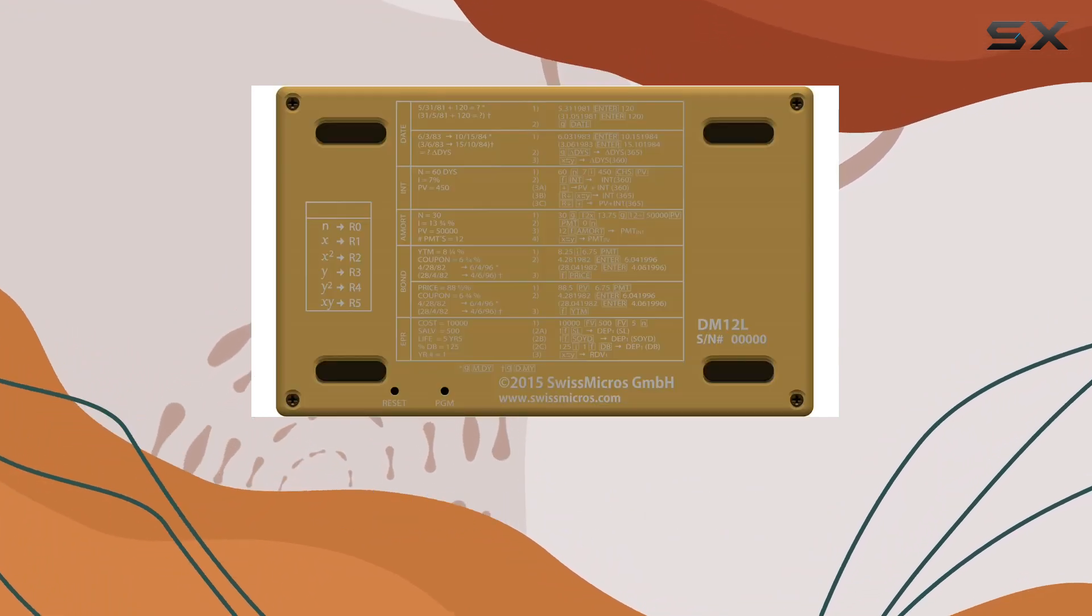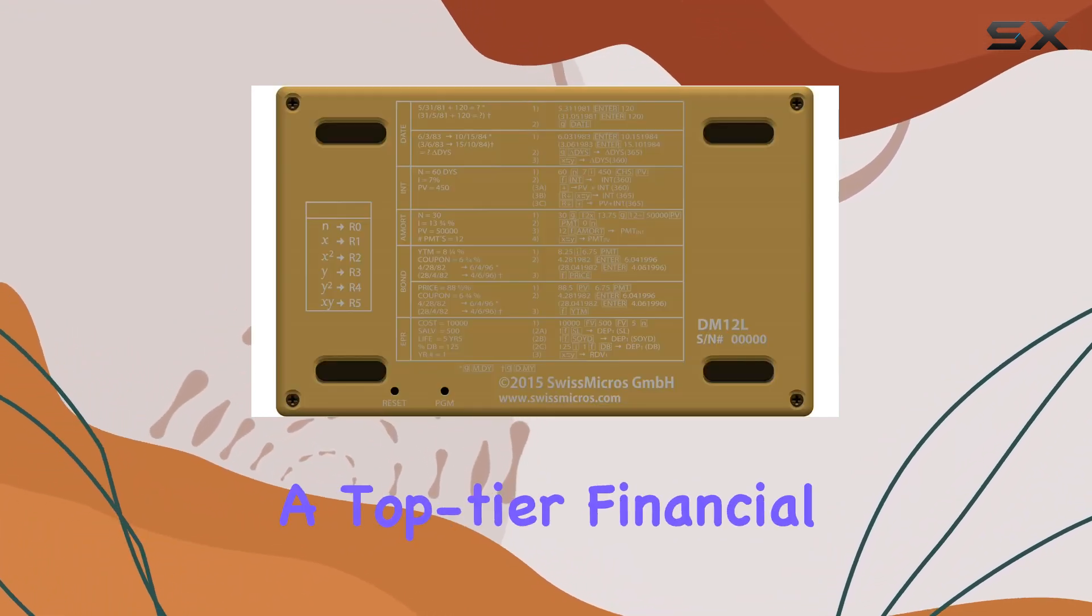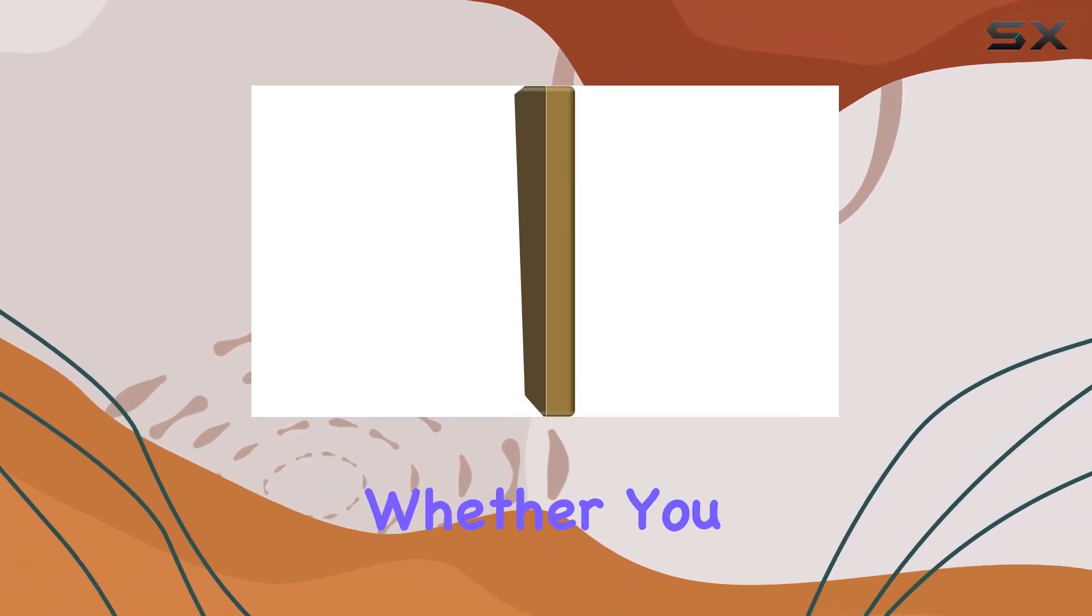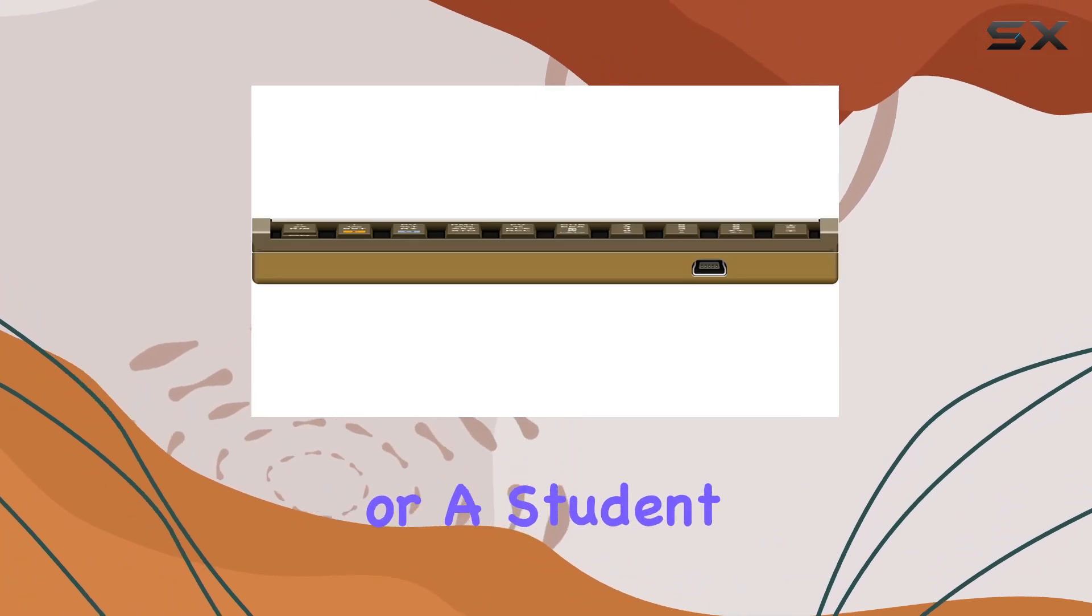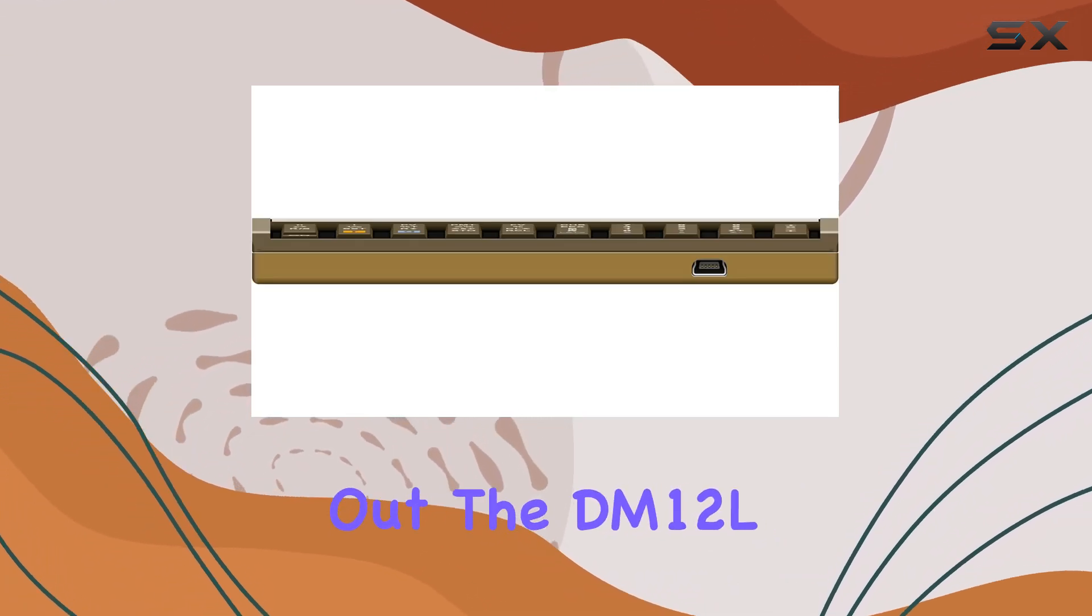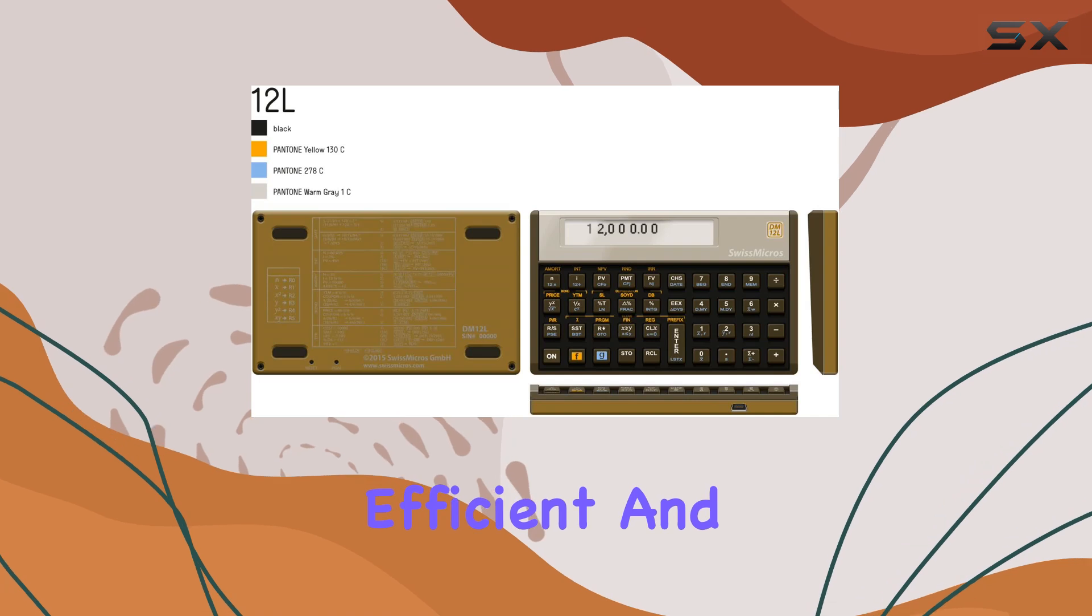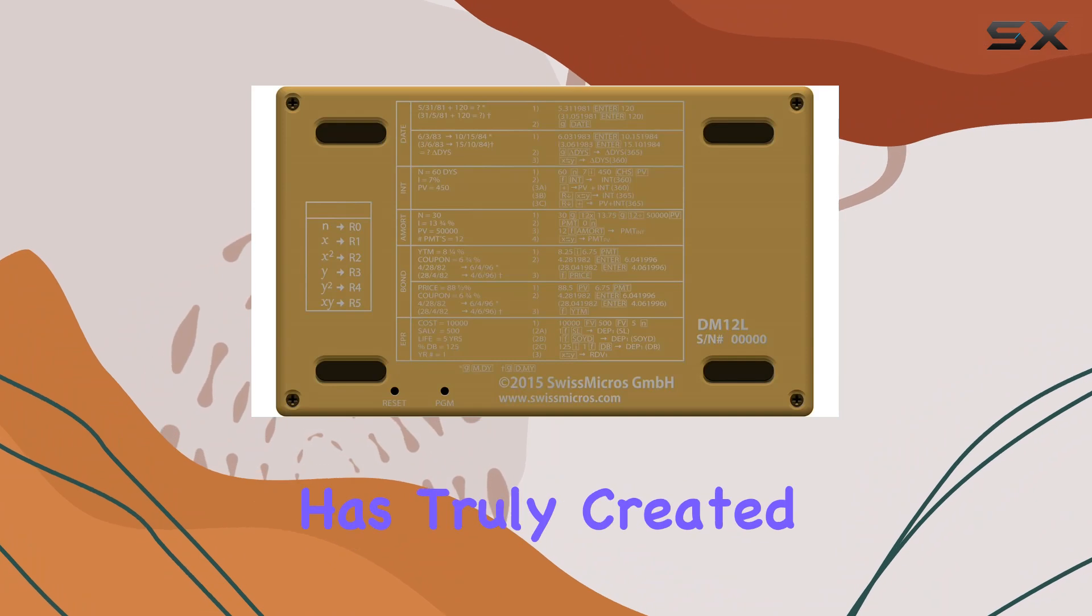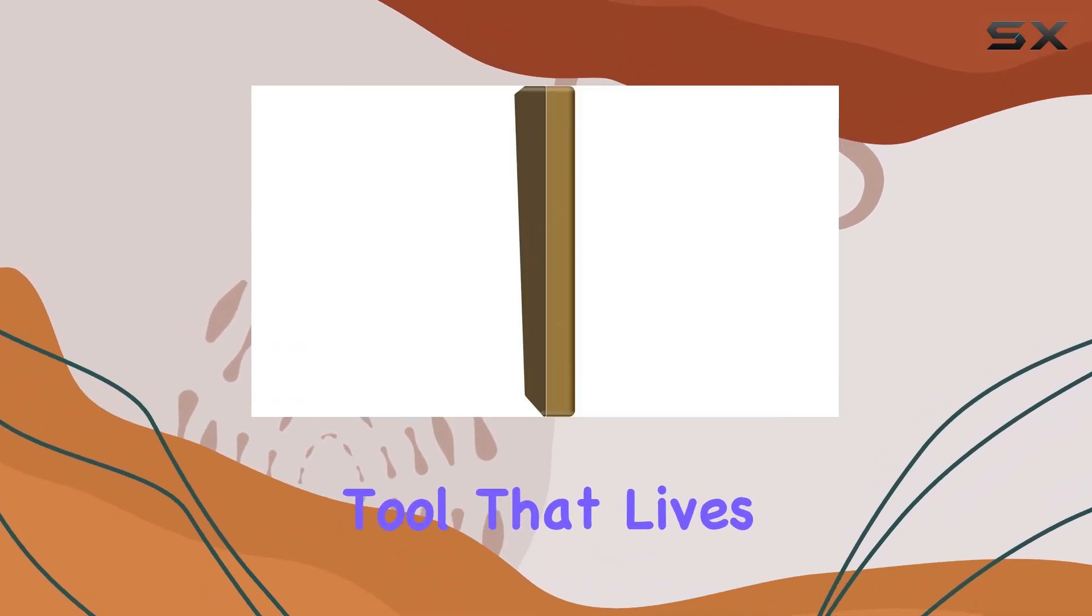In summary, the DM12L business calculator is a top-tier financial calculator that combines classic design with modern efficiency. Whether you are an experienced professional or a student just starting out, the DM12L offers a reliable, efficient, and portable solution for all your financial calculation needs.